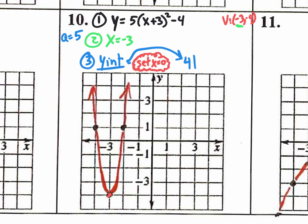Last but not least, what is the range? That's y is greater than or equal to the y value of the vertex, which is negative four. Everything is at negative four on the y or above.